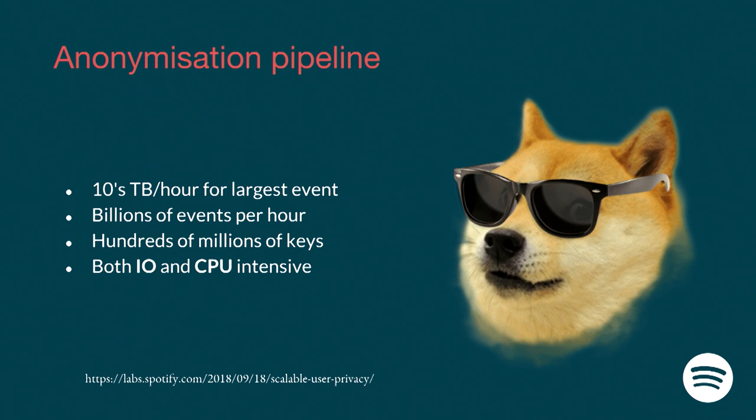The challenge we face is that we're dealing with about 400 event types, each running as its own pipeline. The biggest events can be several tens of terabytes per hour. So on one hand we have billions of events — several tens of terabytes — and we're joining that with hundreds of millions of keys. That's both very IO intensive and very CPU intensive, and we spent a lot of money just shuffling data around. The naive implementation in Crunch just did a full shuffle join of the events and the key dataset.